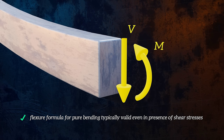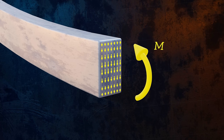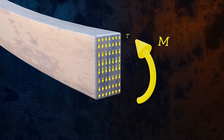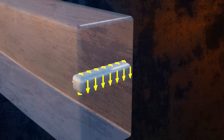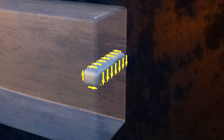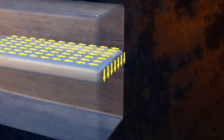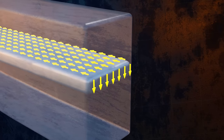The shear force V is the resultant of shear stresses, which act vertically, parallel to the cross section. We denote the shear stresses using the Greek letter Tau. To maintain equilibrium, these vertical shear stresses have complementary horizontal shear stresses, which act between horizontal layers of the beam.